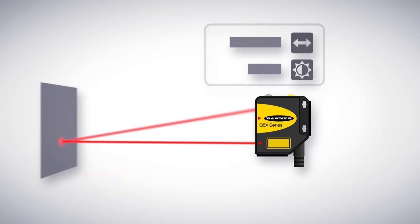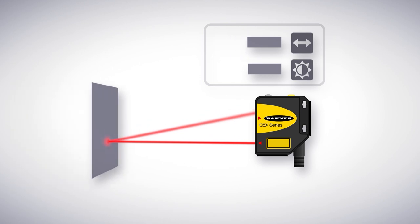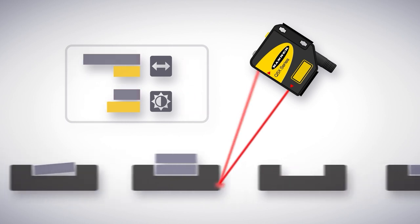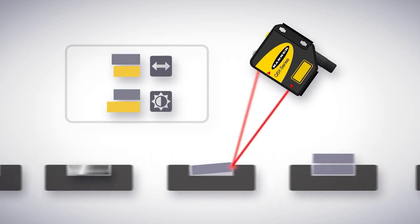The Q5X's dual mode is designed to not only detect changes in distance, but also intensity. This makes it perfect for clear object detection, error-proofing, extended range, presence, absence and contrast.